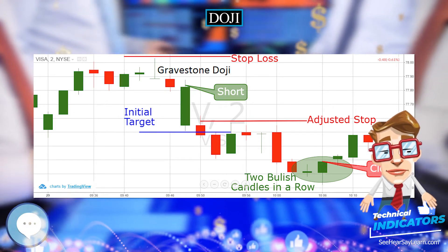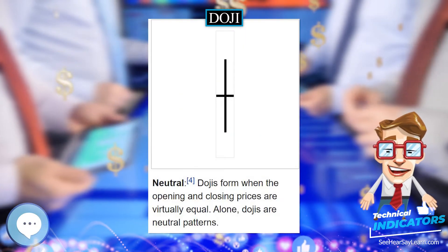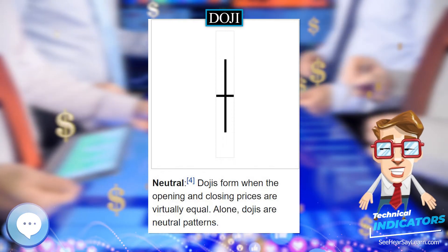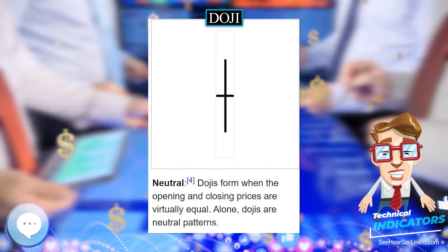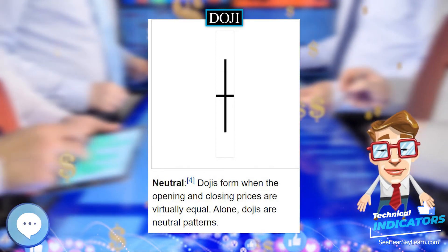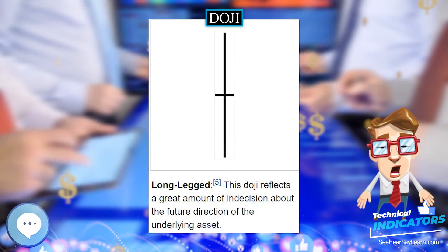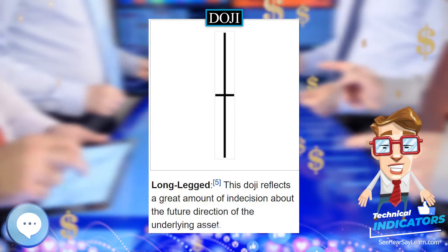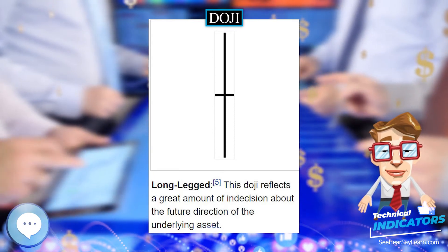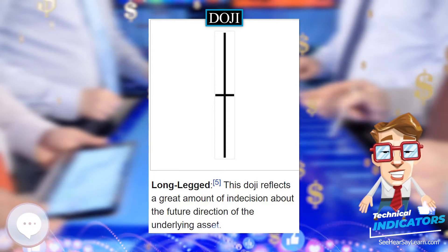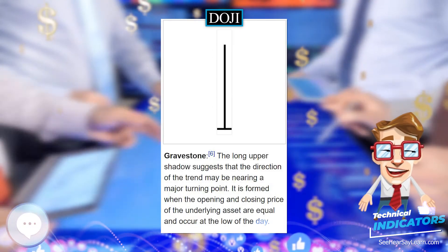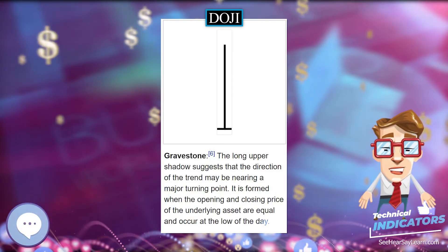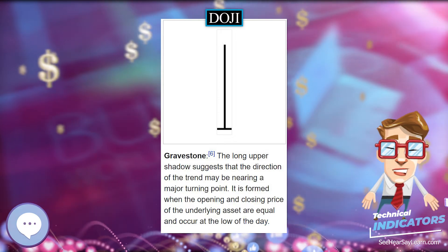If the Doji forms in an uptrend or downtrend, this is normally seen as significant, as it is a signal that buyers are losing conviction when formed in an uptrend, and a signal that sellers are losing conviction if seen in a downtrend.